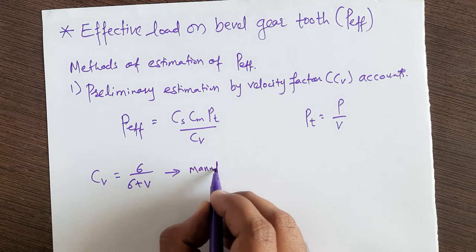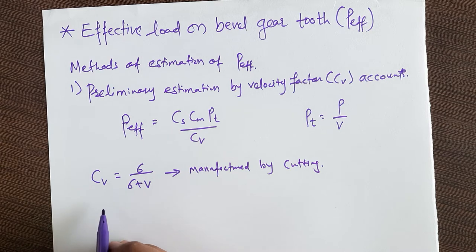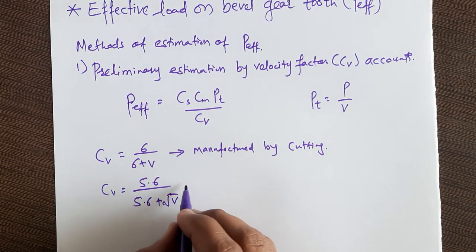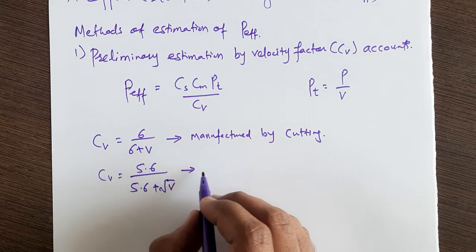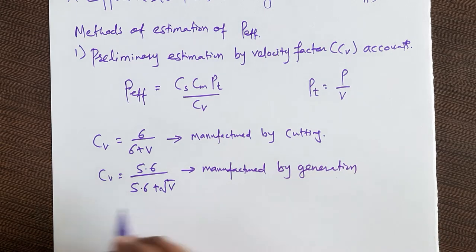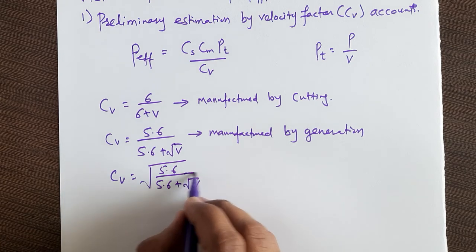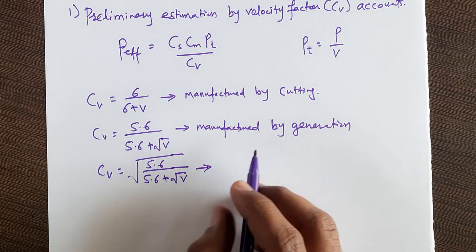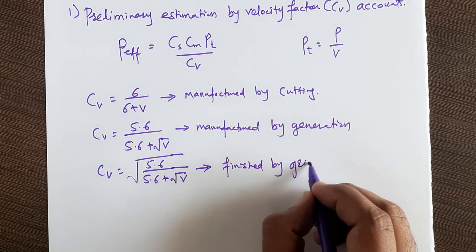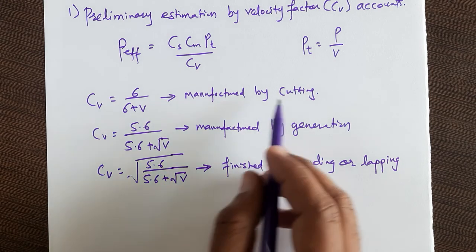If the gear is manufactured by cutting, use CV = 6 / (6 + V). For a bevel gear manufactured by generation, CV = 5.6 / (5.6 + √V). For a straight bevel gear finished by grinding or lapping, CV = 5.6 / (5.6 + √V). These are three different formulas for CV, and you must select the appropriate one based on the manufacturing method.